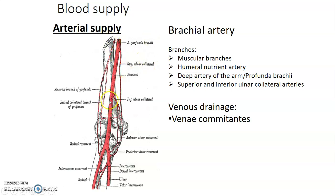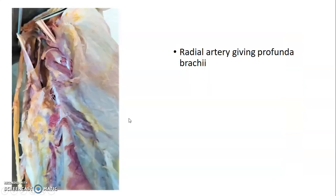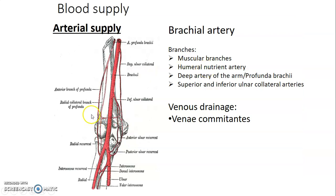The brachial artery has corresponding veins called venae comitantes — the brachial veins — which follow the brachial artery. Elbow anastomosis is communication between branches of the brachial artery and branches of the radial and ulnar arteries. Branches going downwards are collateral arteries, while branches going upwards are recurrent arteries.